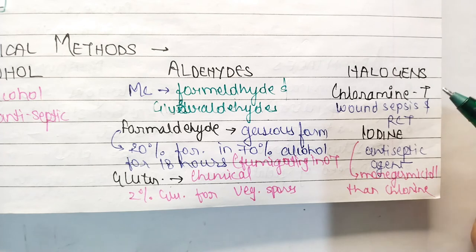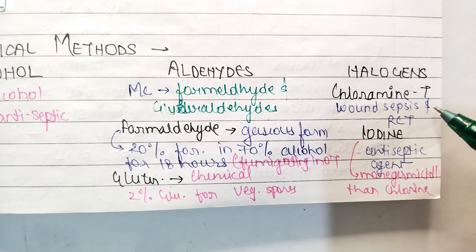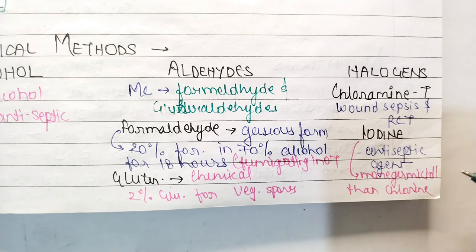In halogens, there are two main agents: chloramine T, which is used in wound dressings and can be used in root canal treatment (RCT), and iodine, which is used as an antiseptic agent and is a germicide. Chlorine is also used, and iodine is more germicidal than chlorine.